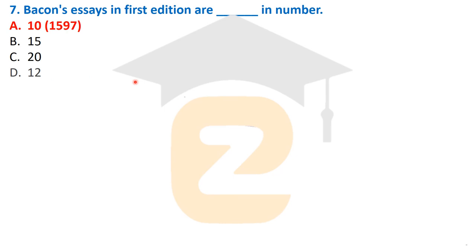Bacon's essays in the first edition were 10 in number, first published in 1597. The second edition came in 1612 with 38 essays, and the last edition came in 1625 with 58 essays. So Bacon's essays were divided into three editions: 1597 with 10, 1612 with 38, and 1625 with 58. Please remember this, as questions are frequently asked about it.